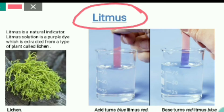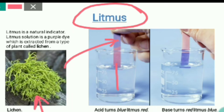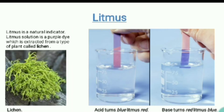Litmus is a natural indicator which is obtained from lichen. This type of plant is called lichen, and from this lichen we get litmus paper. Now how does litmus paper help you tell whether a solution is acidic or basic? Acids turn blue litmus red — so if you add litmus paper to a solution and it turns red, it is an acid. And if you add litmus paper and it turns blue, it is a base. So acids turn blue litmus red and base turns red litmus blue.